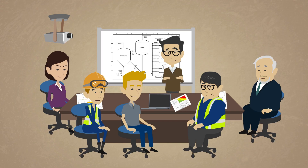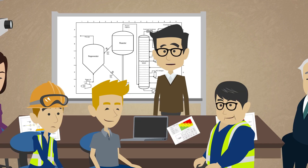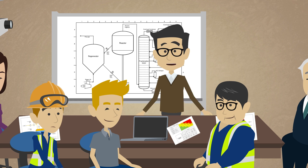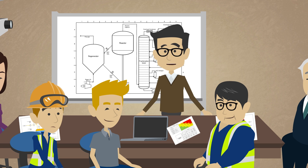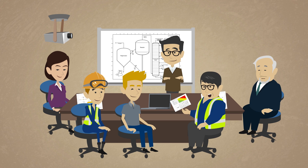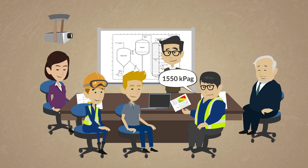Why do we need to know the pump discharge pressure when it's deadheaded? It doesn't normally operate that way. When we get into the HAZOP and come across a scenario that blocks the discharge of the pump, we need to know how high the pressure can get and if it is credible to overpressure any equipment exposed to that pressure. All the piping here is designed above that 1,550 kPaG, so there shouldn't be a concern for overpressure with these pumps.